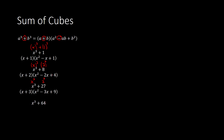One more: x cubed plus 64. This would be x cubed, and then 64 would be 4 cubed. So we have x plus 4 times x squared, and then 4 times x, and then 4 squared gives me 16. Notice the pattern.